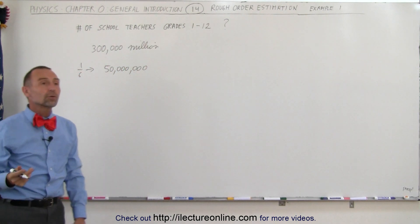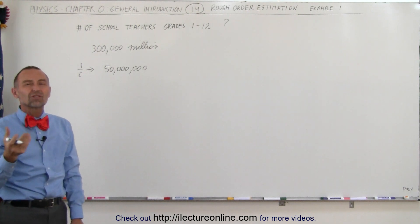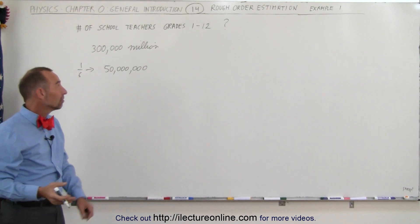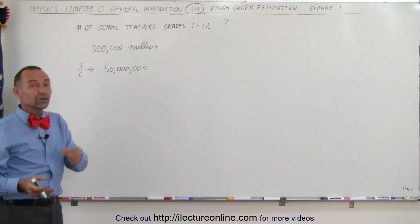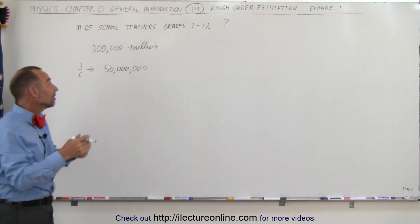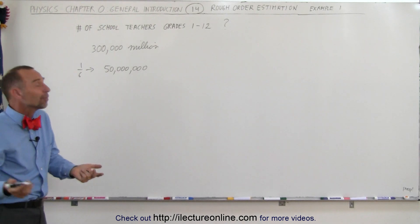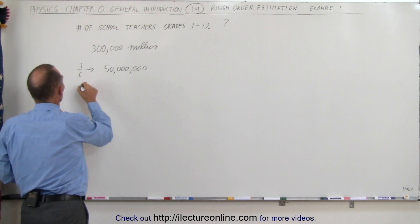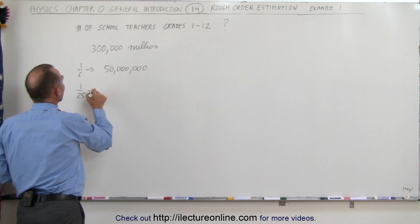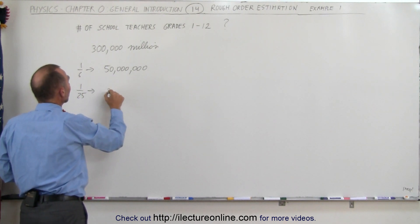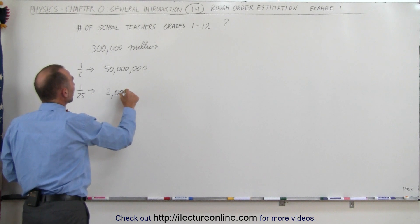Now the next thing you want to do is estimate, well, how many students on average are in each class? And since we have 50 million there, you can pick a number that is easily divided into 50 million. So I'm going to say the average class size is about 25. So one-twenty-fifth, I would then divide 50 million by 25, I would then end up with 2 million.